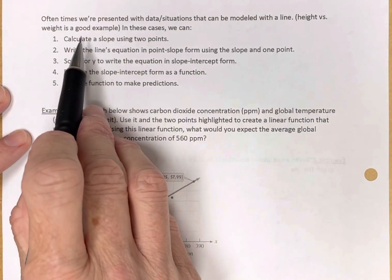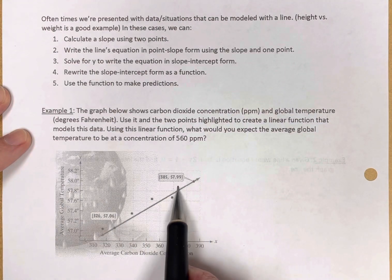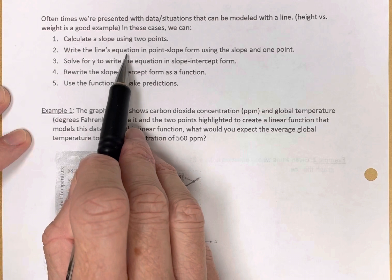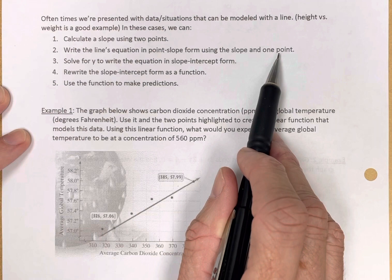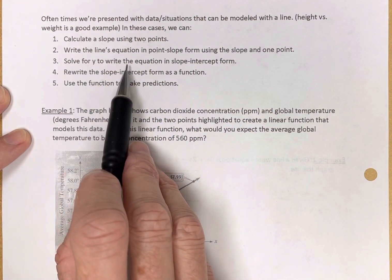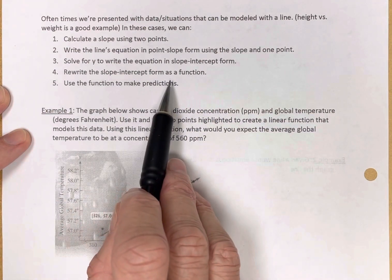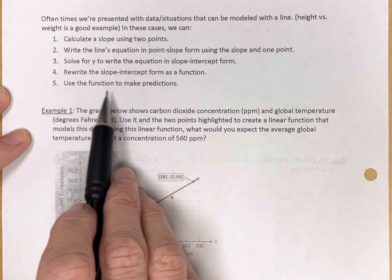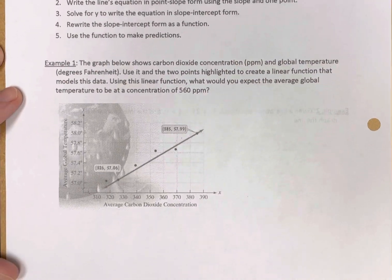In these cases, we can calculate a slope using two points and here's a model and you can see two points that have been highlighted. We can write the line's equation in point-slope form using the slope and one point, so I have to calculate the slope which we're doing here. We can solve for y to put it into slope-intercept form. We can then rewrite it as a function and put it into function notation and use the function to make predictions. So we're going to do all those things here with example one.